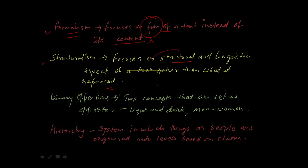Binary oppositions are two concepts that are set as opposites, like light and dark, or man and woman. Hierarchy is a system in which things or people are organized into levels based on status.